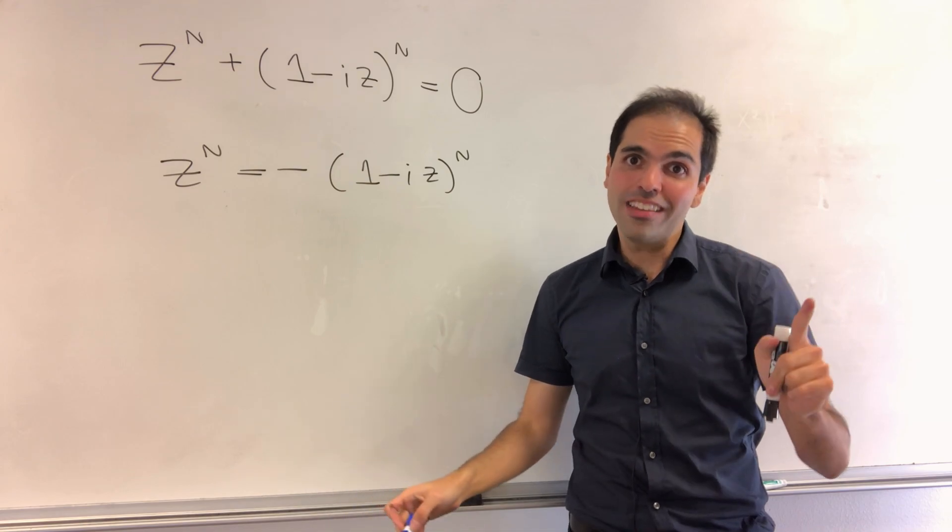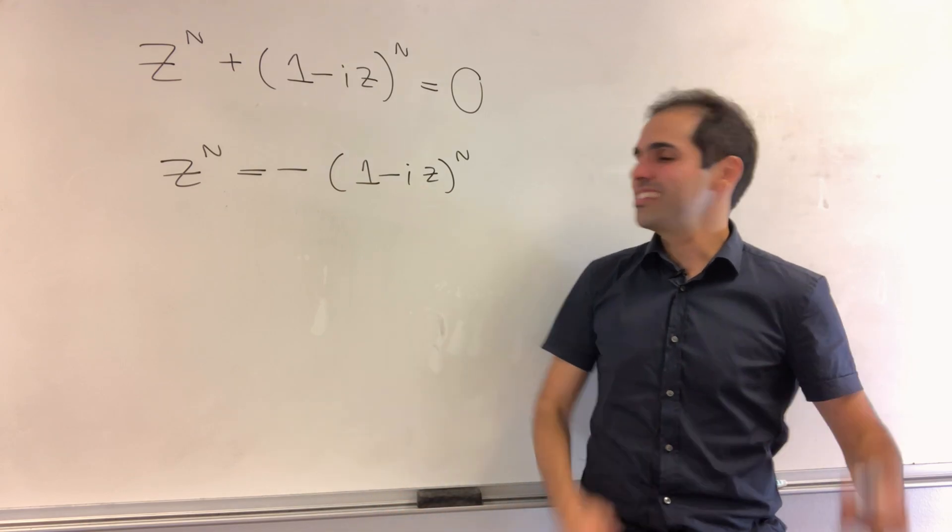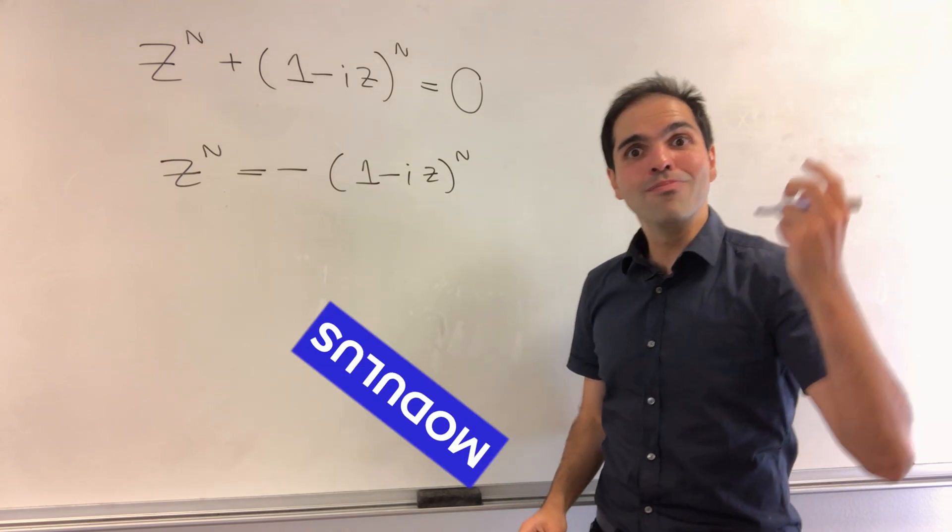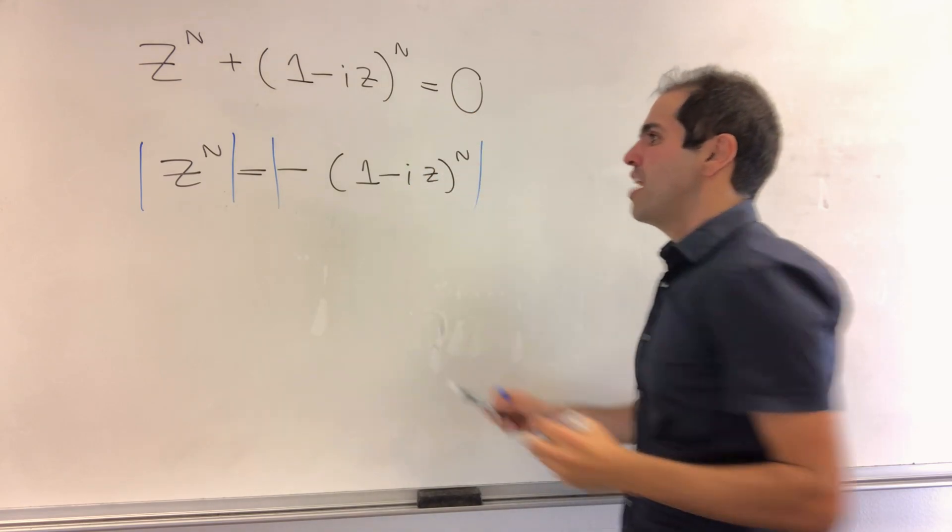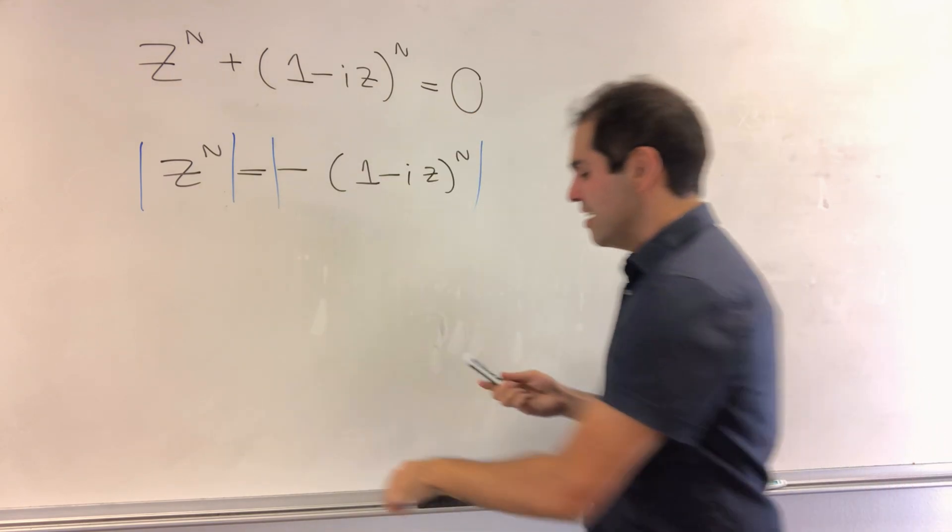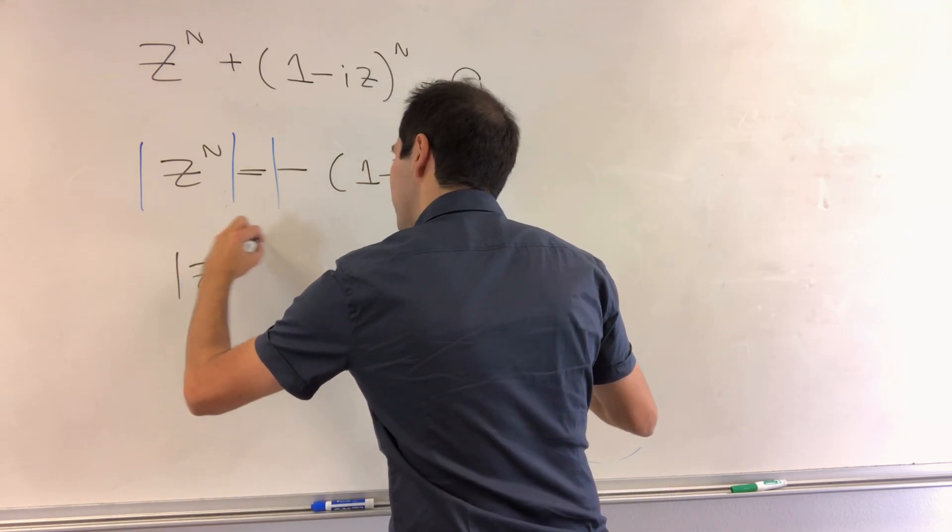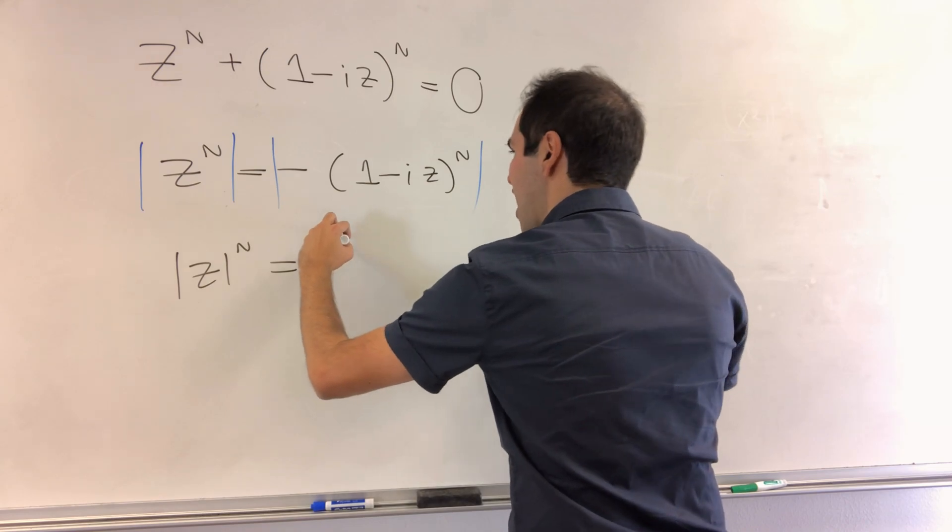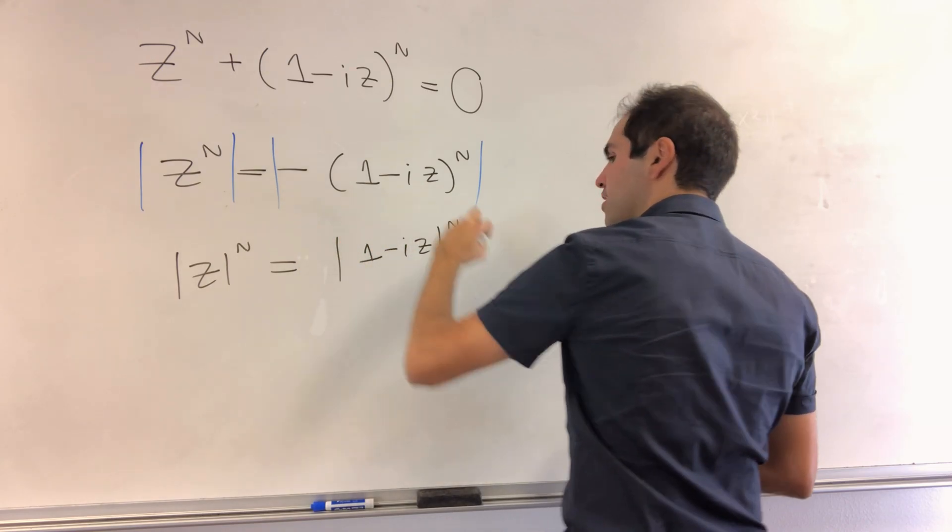Instead, what do we do? And again, think first lecture in complex analysis. Take the modulus or absolute value because the absolute value of minus x is the absolute value of x. So what you're left with is absolute value of z to the n equals absolute value of 1 minus iz to the n.